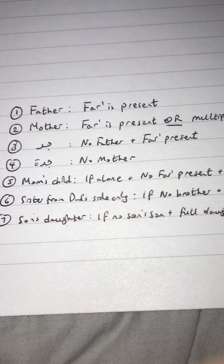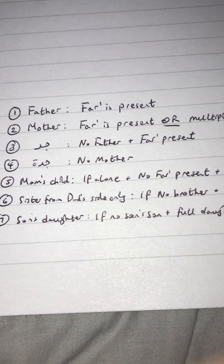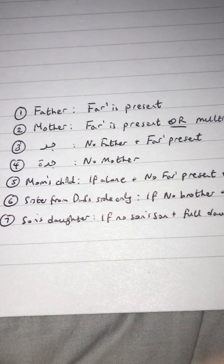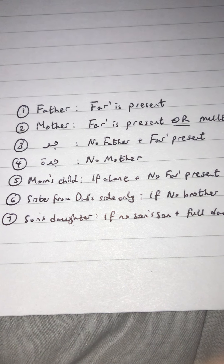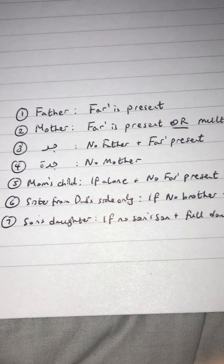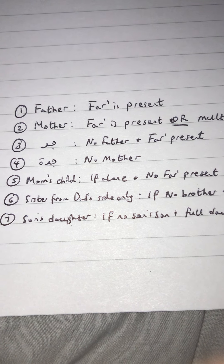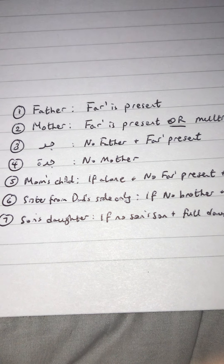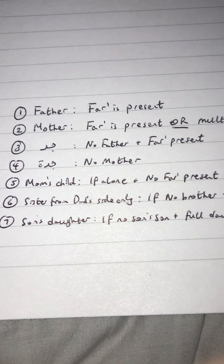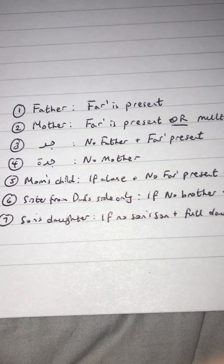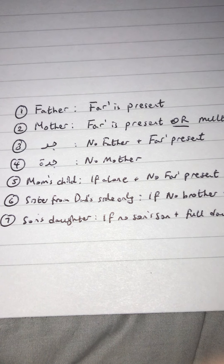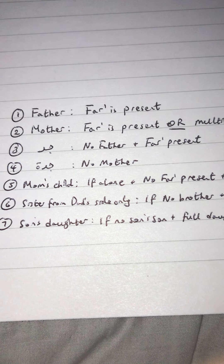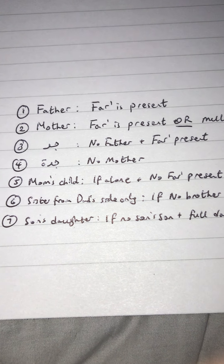The second individual who can inherit a sixth is the mother. The mother inherits a third if two conditions are met and it is not an umari issue. The two conditions were: no farah warith, and no multiple brothers or sisters of the deceased. So if there is a farah warith, or if there are multiple brothers or sisters, then the mother drops from a third to a sixth.